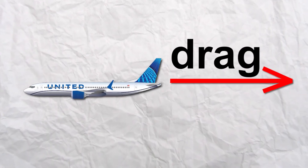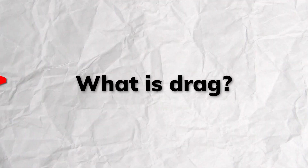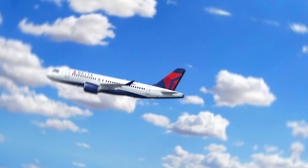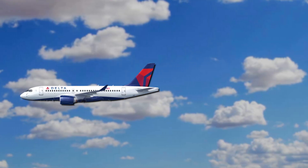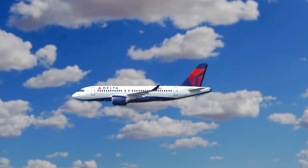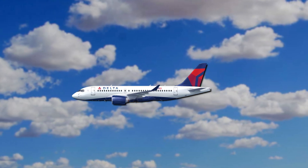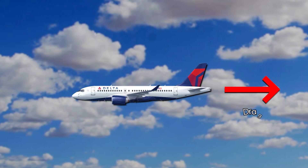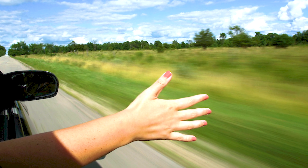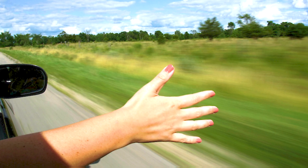The short answer for what they do is they reduce drag. But now you might ask, what is drag, and how do winglets reduce it? Drag is like air's way of slowing an airplane down. When a plane moves through the sky, it has to push through a lot of air, and that air creates a resistance, which is known as drag. Just imagine yourself sticking your hand out of a car that's moving fast, and you'll feel exactly what drag is.